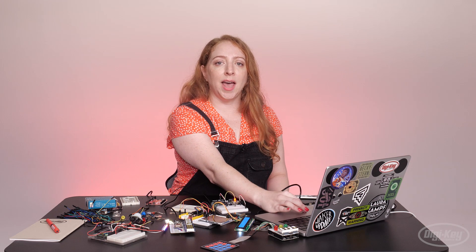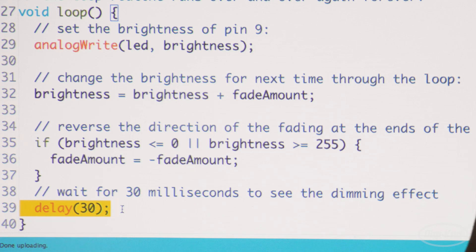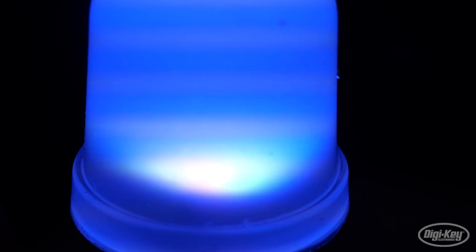The delay at the end prevents the code from running so fast that you can't see the effect, and the fast flashing of PWM is why you can sometimes see LED lighting flicker when you record it on your camera or phone, depending on your shutter speed.